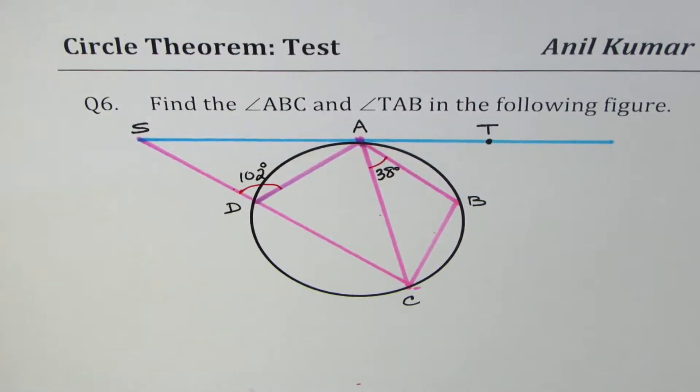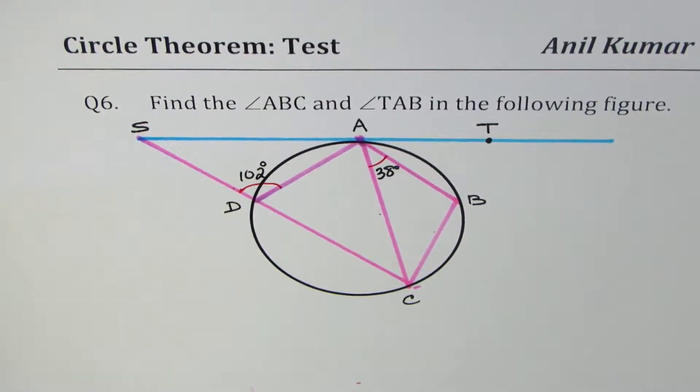I'm Anil Kumar, sharing with you a test question based on circle theorem. Question number six. Find the angle ABC and angle TAB in the following figure. You can always pause the video, answer the question, and then look into my suggestions.